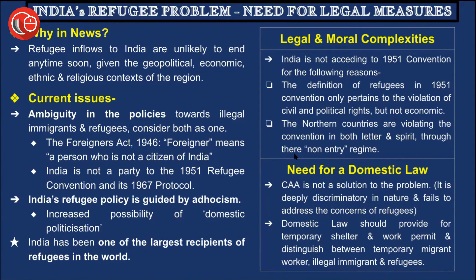The article proposes that domestic laws are needed to deal with such situations. While the Citizenship Amendment Act may come to mind, the CAA is itself considered deeply discriminatory in nature and fails to address refugee concerns, as it only considers refugees from religions like Buddhism, Sikhism, and Hinduism — Muslim minorities, including the Rohingya, are not included. Instead, domestic law should provide temporary shelter, work permits, and clearly distinguish between temporary migrant workers, illegal immigrants, and refugees, ensuring adequate shelter, food, and temporary work permits for those seeking refuge.